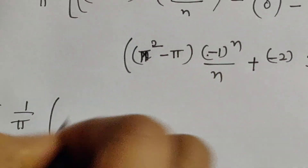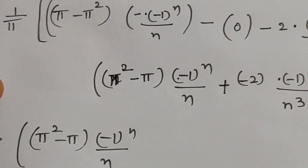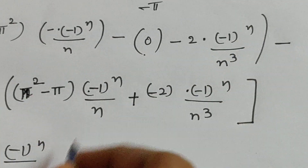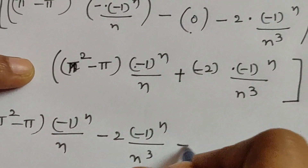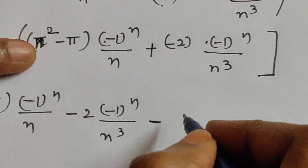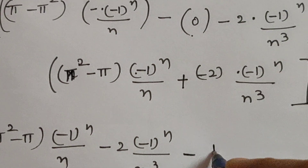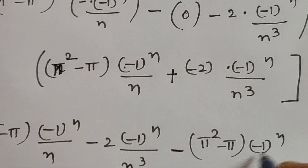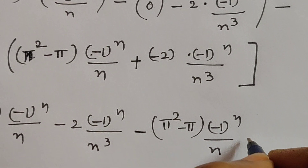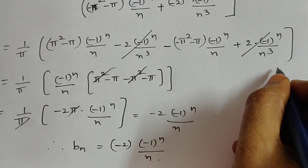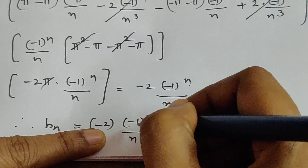After collecting and simplifying all terms, 1 by pi times the combined expression. On doing the simplification, we get the Fourier coefficient b n equal to minus 2 times minus 1 whole power n by n.